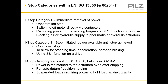Stop category 2 is not in standard 13850 but it is included in IEC 60204 part 1. Power is maintained to the actuators even after machine axes have come to a standstill. This is to be used if a safe position or datum position is required for position holding — it could also be used to hold against other forces such as gravity. Some variable speed drives are equipped with a specific SS2 function.